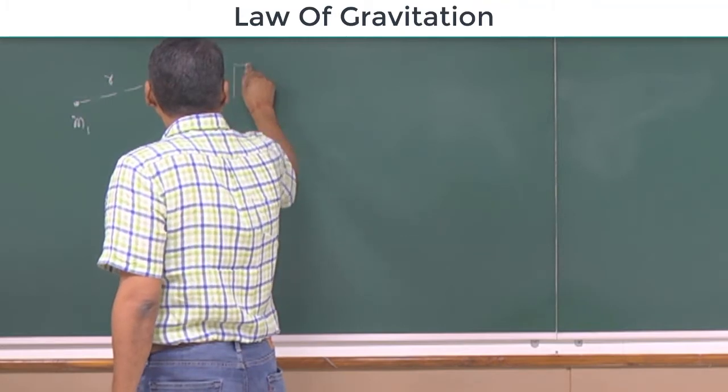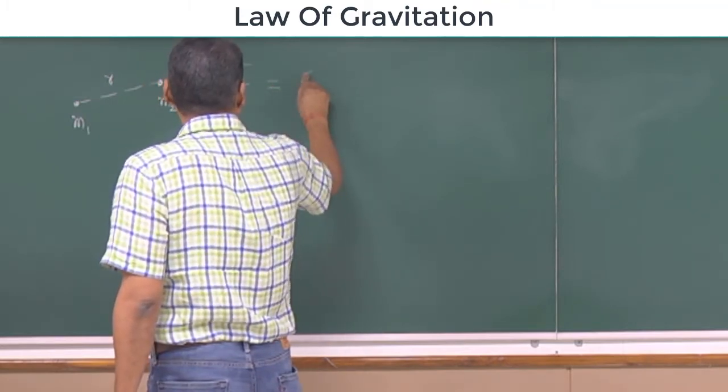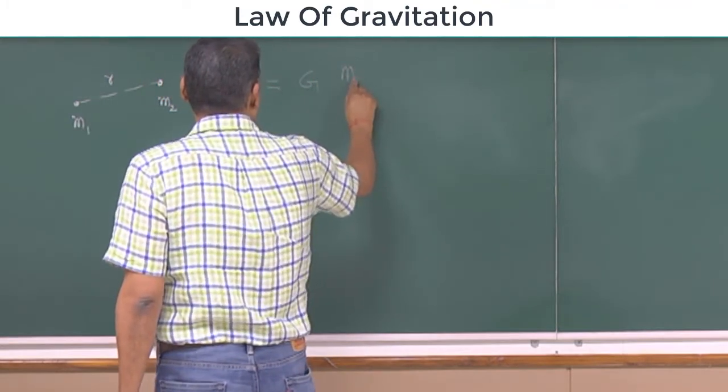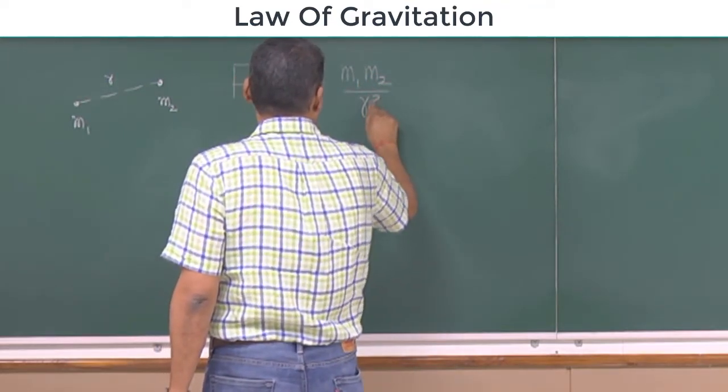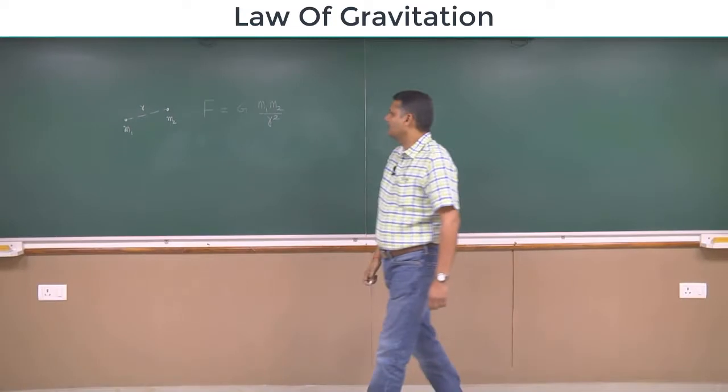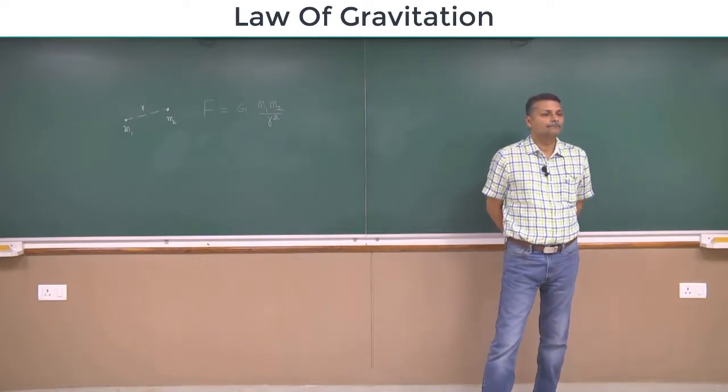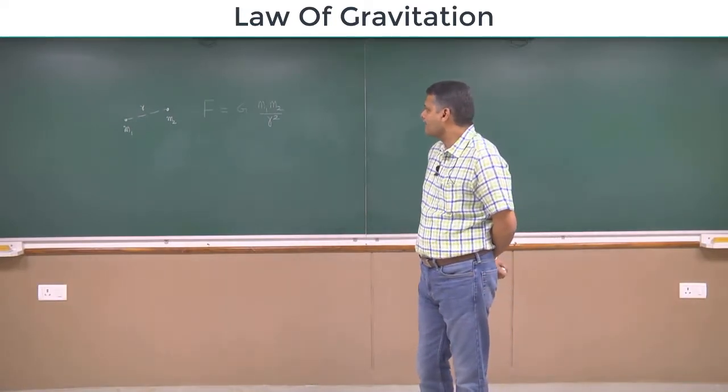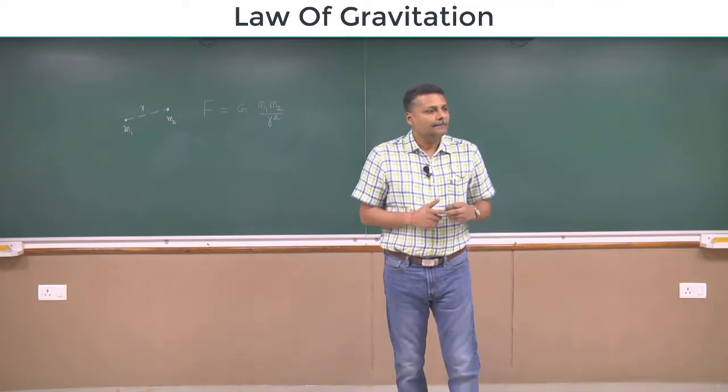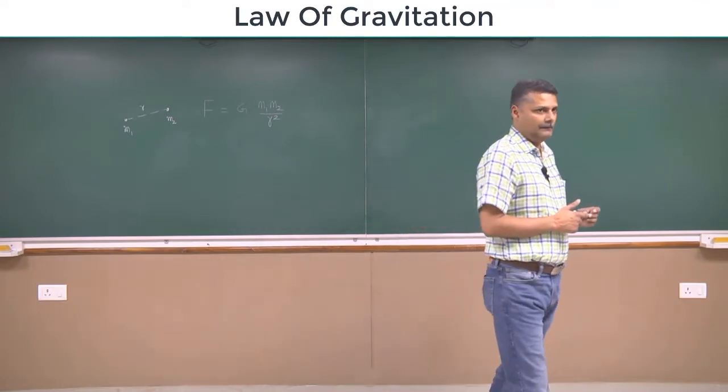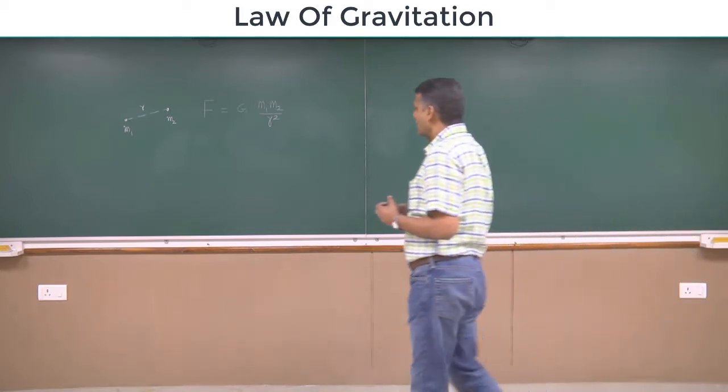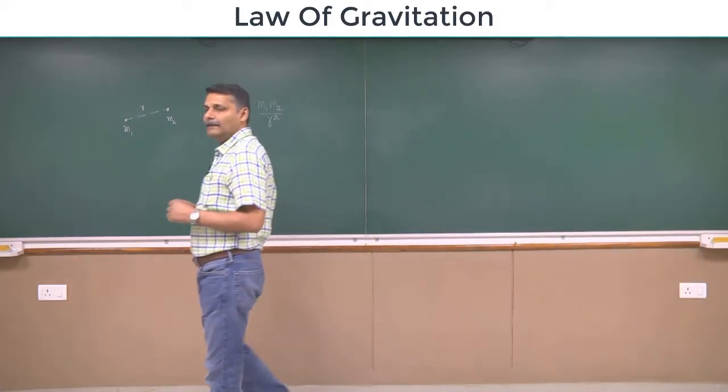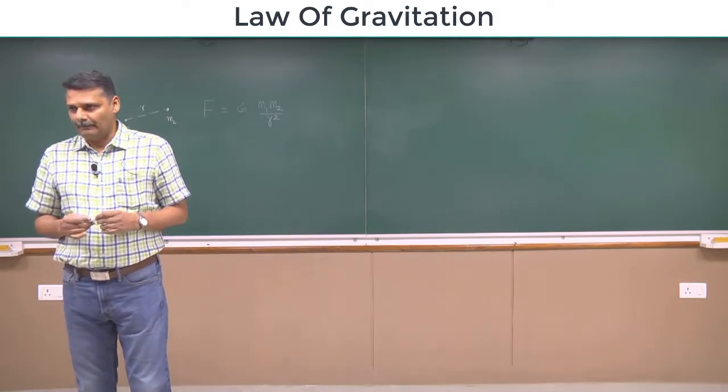First we write magnitude F equal to G m1 m2 by r square. You know the magnitude, direction is known, but you want vector notation. So what is the best way to convert a scalar into vector?